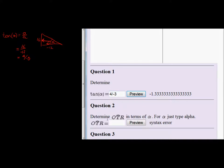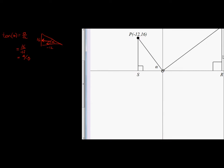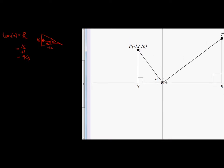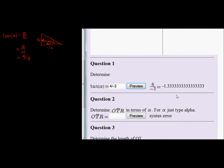Okay, next question. Determine OTR, angle OTR. Here we go. OTR means it's this angle. Determine that angle in terms of Alpha. And here's just some information for Alpha. Just type Alpha. If I want to type in Alpha there, I just write Alpha.